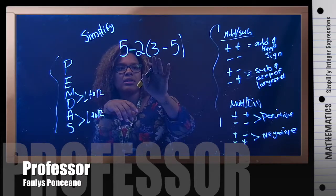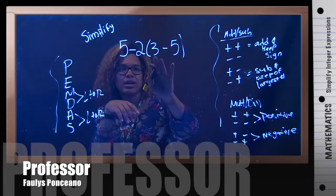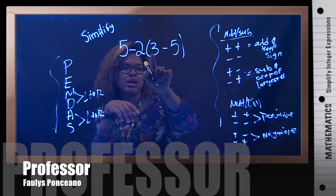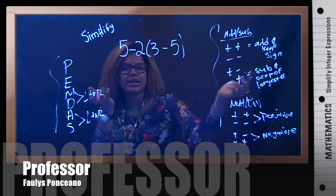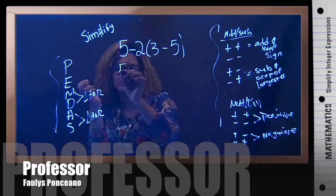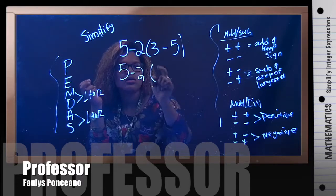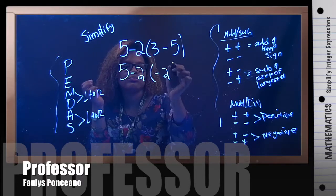Then I have 3 minus 5. Positive, negative, different signs. You're going to subtract and keep the sign with the largest number. 3 minus 5, negative 2.